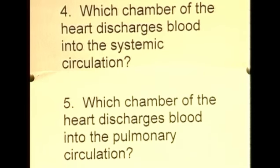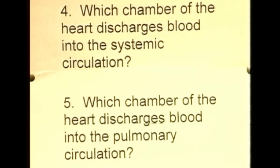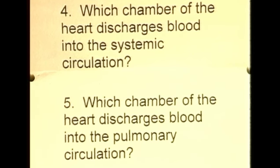Question five: the chamber of the heart that discharges blood into the pulmonary circulation — that is, which chamber pumps blood to the lungs? From the diagrams we've looked at, it's the right ventricle which discharges blood into the pulmonary arterial system and onto the lungs.